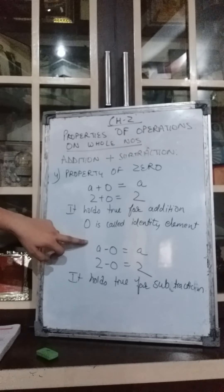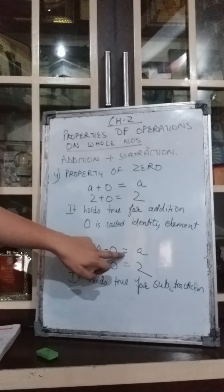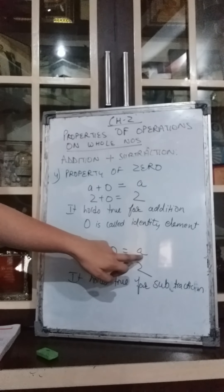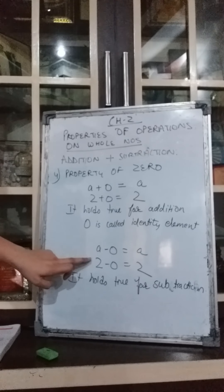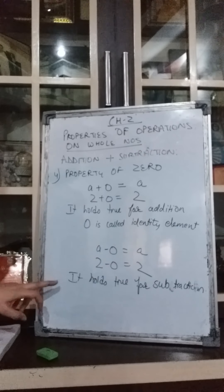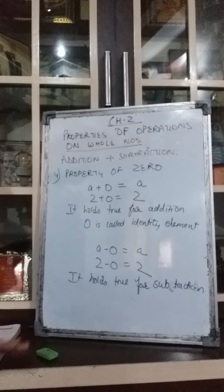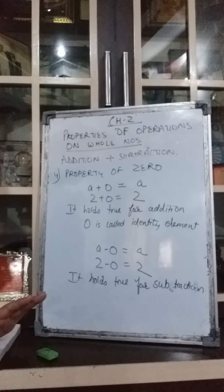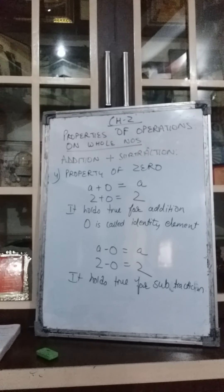Now let us see whether the property of zero holds true for subtraction. A minus 0 should give A only. Taking A as 2, 2 minus 0 gives 2. So this property holds true for subtraction also. Now let us do exercise 2B and then it will be more clear.